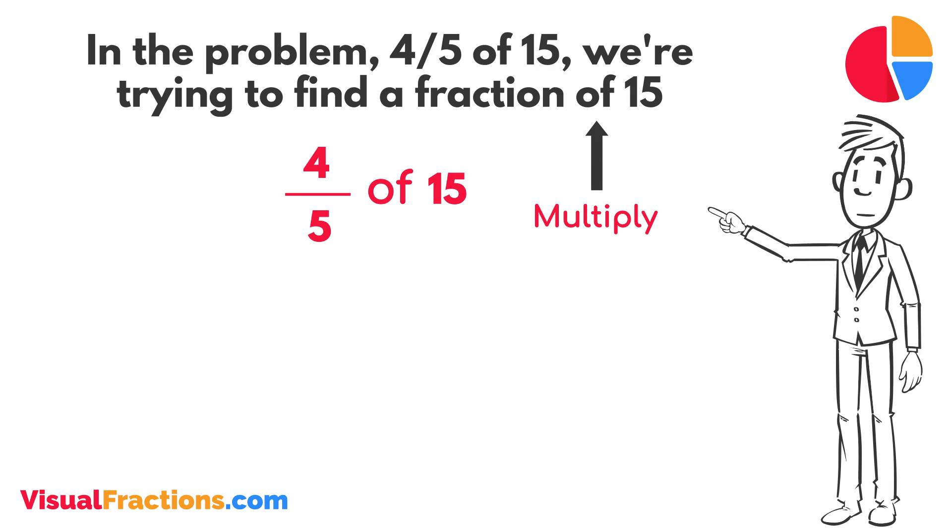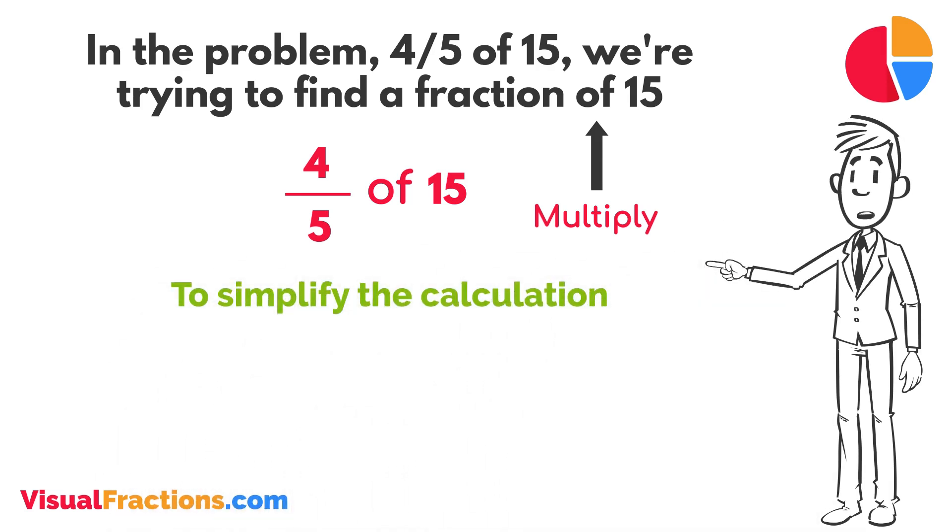4 fifths times 15. To simplify the calculation, we first convert our whole number into fraction form, writing 15 as 15 over 1. This transformation makes it easier to work with our numbers as fractions.